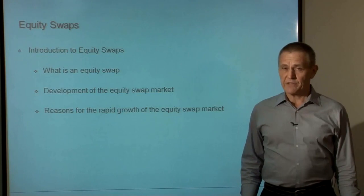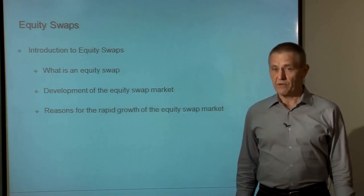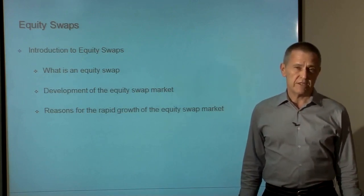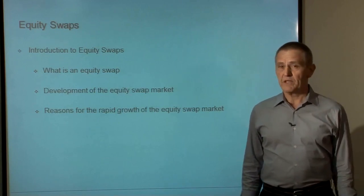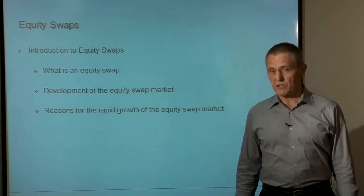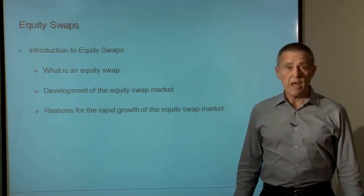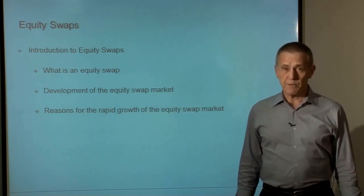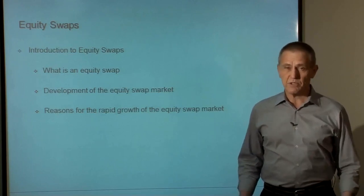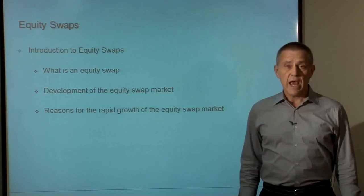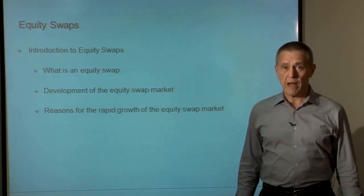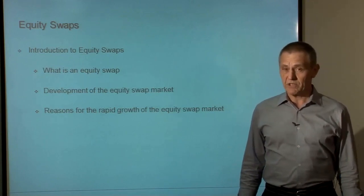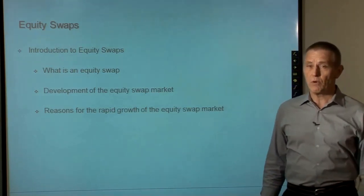Equity swaps were one of the last of the swaps developed. While the first swap occurred in 1982, the first equity swap didn't occur until the late 1980s, some time after the development of all of the other forward commitment swaps — currency swaps, interest rate swaps, commodity swaps. But part of the reason equity swaps were able to grow as rapidly as they did was because the basic terminology, concepts, and infrastructure for trading had been evolved in the context of the rapid growth of those other swap markets. Equity swaps were able to stand on the shoulders of those other markets and therefore able to evolve a lot more rapidly.